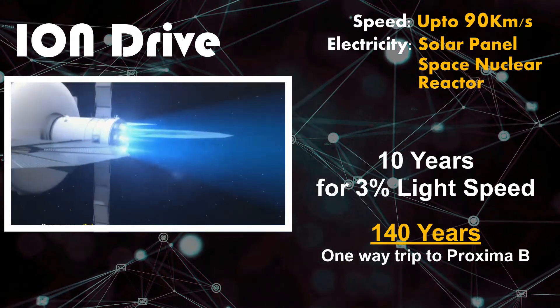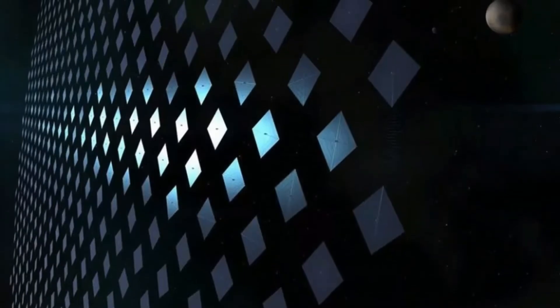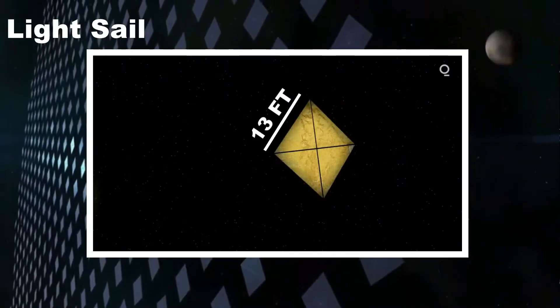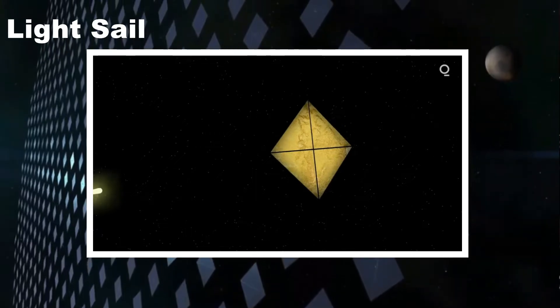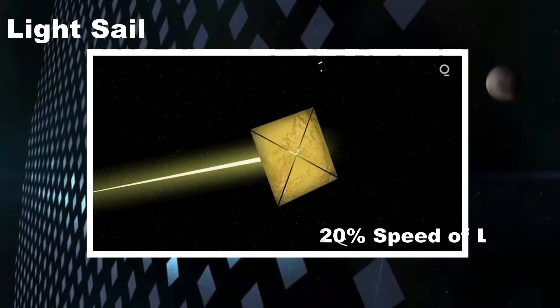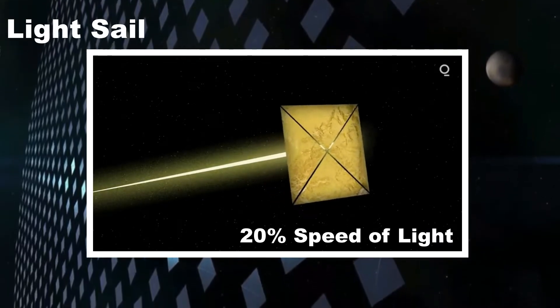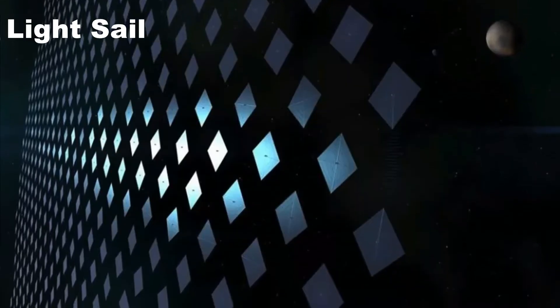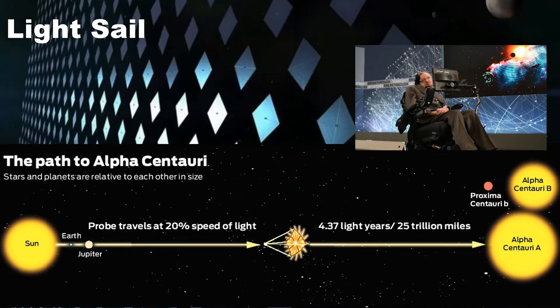But there is another technology available that we might use. Light sails. A 13-feet-wide light sail coated with sapphire can use pressure of light from ground-based lasers to propel a chip-sized probe of few grams to 20% speed of light, which can take it to Alpha Centauri in about 20 years. This breakthrough project was envisioned by famous physicist Stephen Hawking.